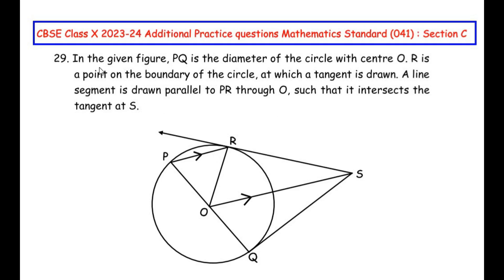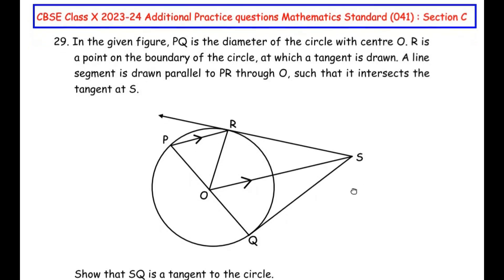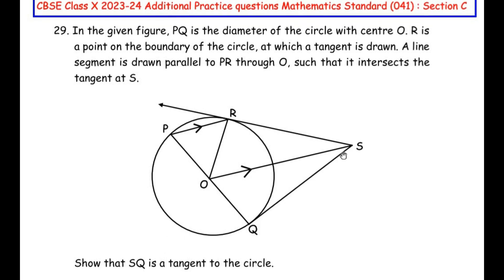Let us start. In the given figure, PQ is the diameter of the circle with center O. R is a point on the boundary of the circle at which a tangent is drawn. A line segment is drawn parallel to PR through O such that it intersects the tangent at S. We have to show that SQ is a tangent to the circle.